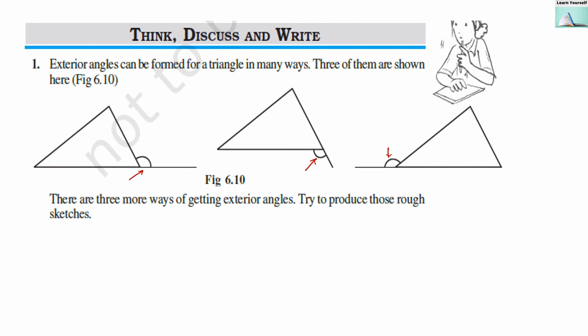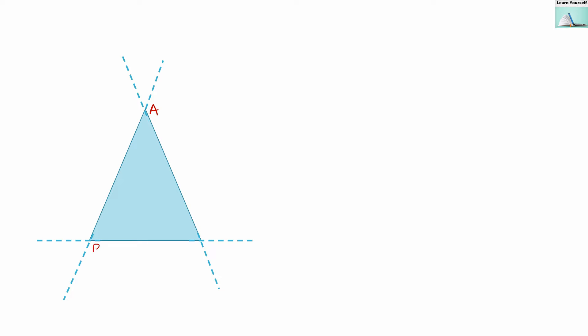Let us first understand what exterior angles are and how we can form them. This is triangle ABC, and I have extended each line segment. If I extend line segment AB like this, then this is the first exterior angle. Similarly, when I extend line segment AC like this, then my second exterior angle will be like this. So with vertex A, I got two exterior angles.